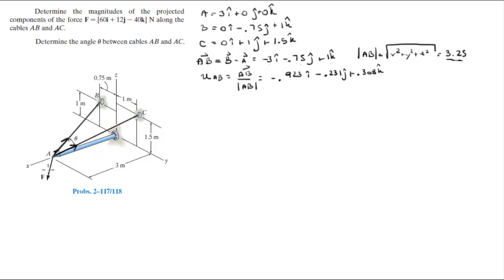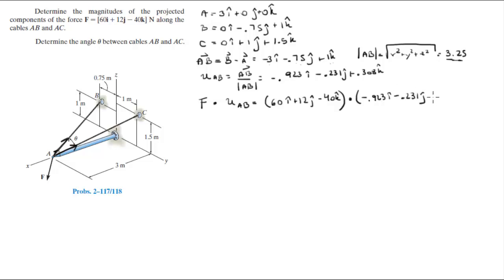Now that we have the unit vector, we find the projection of F along AB by calculating the dot product of F and the unit vector AB. F is 60i + 12j − 40k, dotted with −0.923i − 0.231j + 0.308k. That gives: 60 × (−0.923) = −55.38; 12 × (−0.231) = −2.772; and −40 × 0.308 = −12.32.